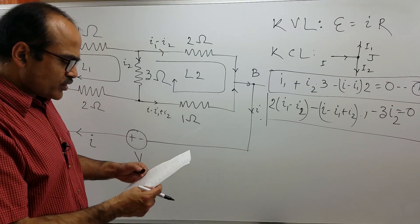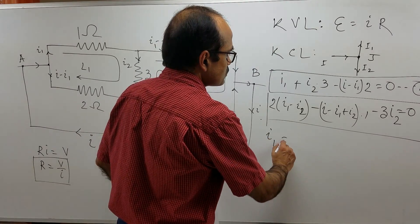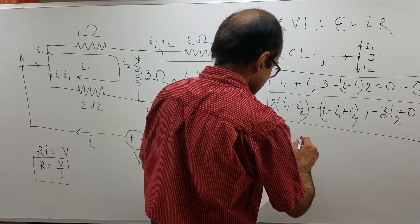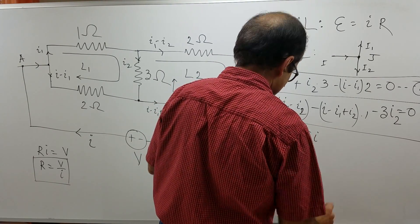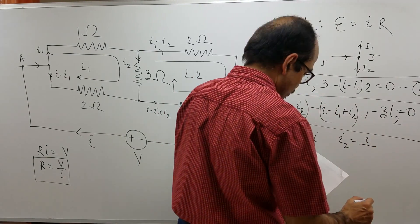Now, if we solve these two equations, I get I1 equal to 5 over 8 I and I2 equal to I over 24.